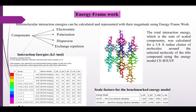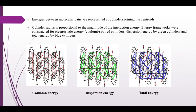Intermolecular interaction energies can be calculated and represented with their magnitude using energy frameworks. It is expressed in terms of four components: electrostatic, polarization, dispersion, and exchange repulsion. The total interaction energy, which is the sum of scaled components, was calculated for a 3.8 Å radius cluster of molecules around the selected molecule of the title compound using the energy model CE-B3LYP. Energies between molecular pairs are represented as cylinders joining the centroids, with cylinder radius proportional to the magnitude of the interaction energy. Energy frameworks were constructed for electrostatic energy by red cylinders, dispersion energy by green cylinders, and total energy by blue cylinders. The interaction energy calculated for the title compound along the c-axis reveals that the dispersion component is most significant.